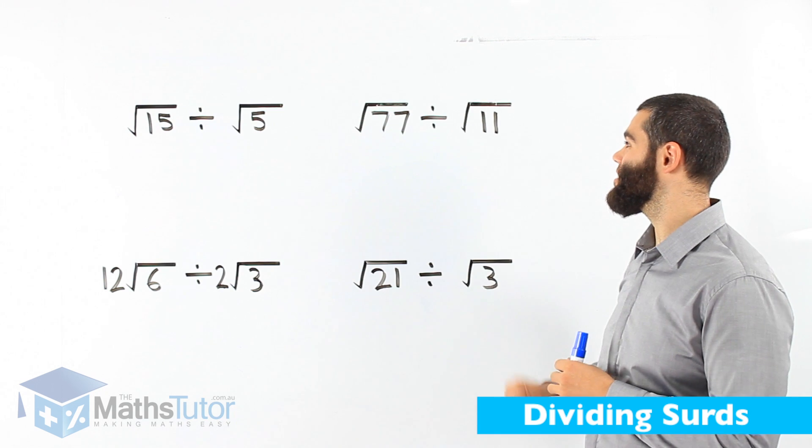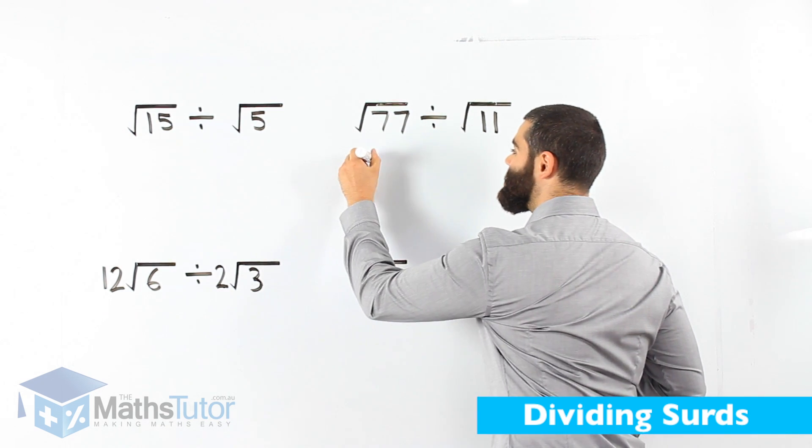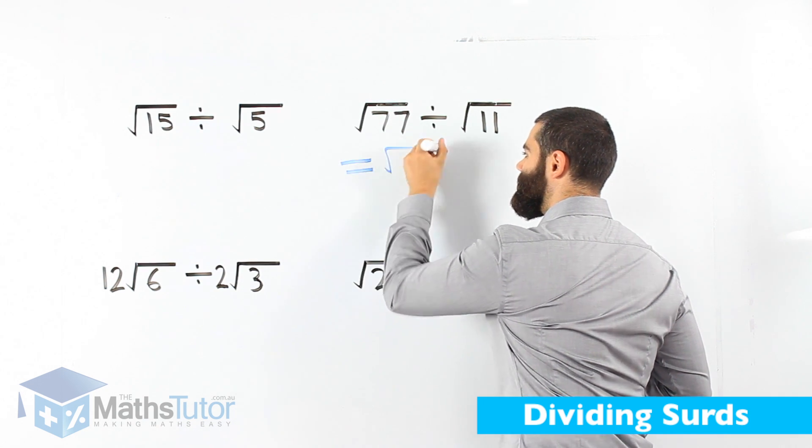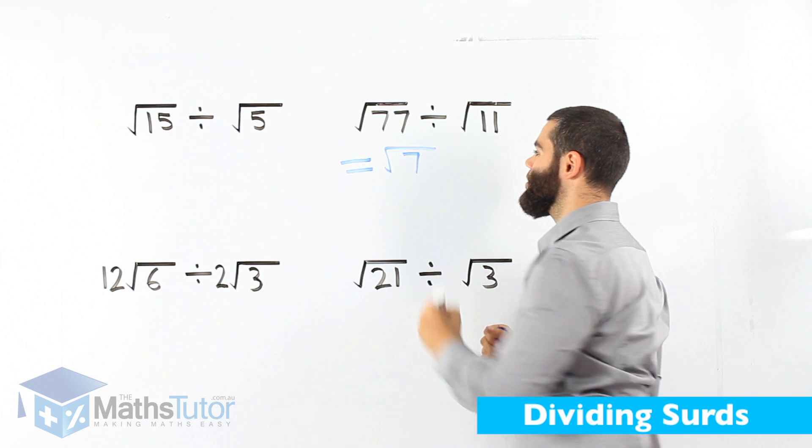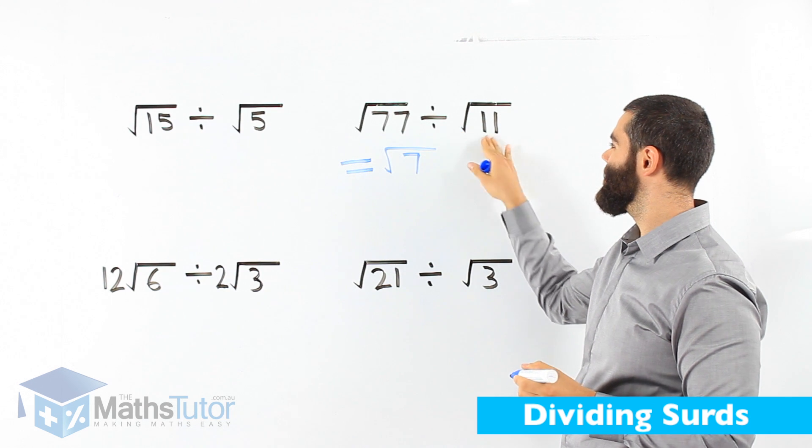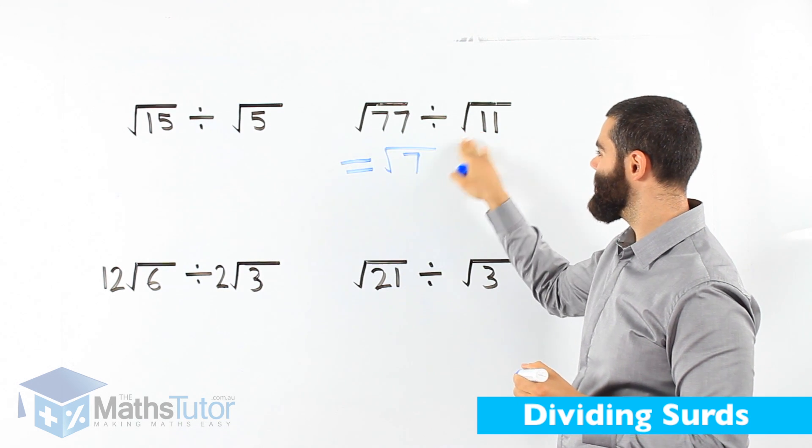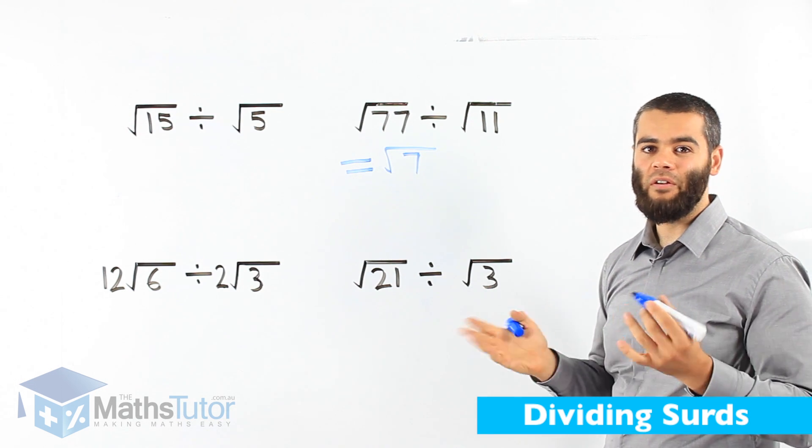We have root 77 divided by root 11. How do we do it? Very simple. 77 divided by 11 is 7, so root 7 is our answer. Root 77 divided by root 11, 77 divided by 11 is 7, so our final answer is root 7. Very easy.